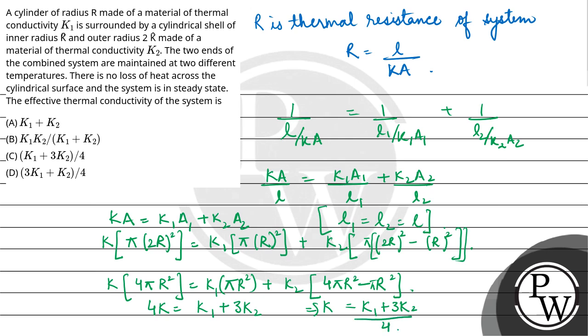So our final answer is option C, K1 plus 3K2 upon 4. I hope you understood it well. Best of luck.